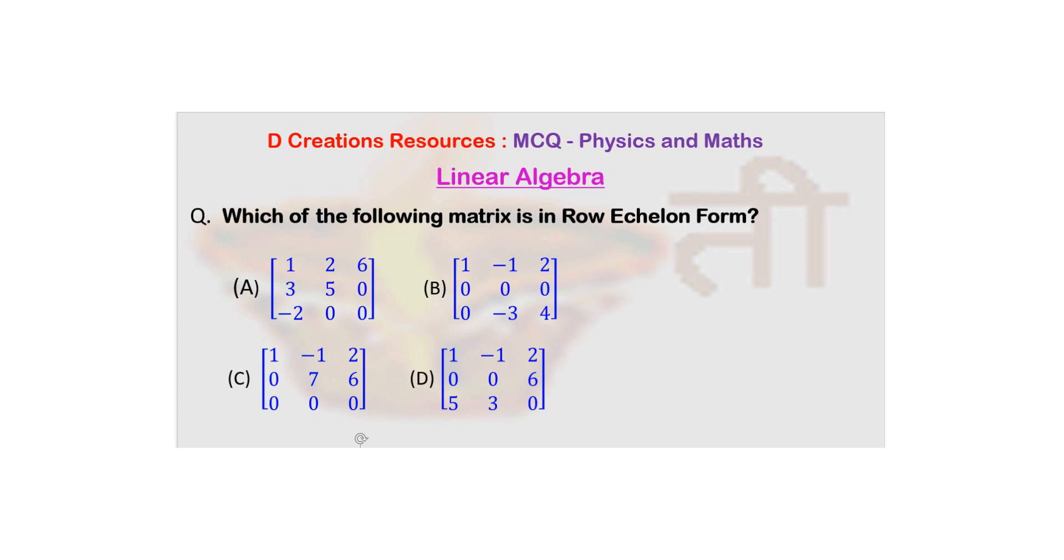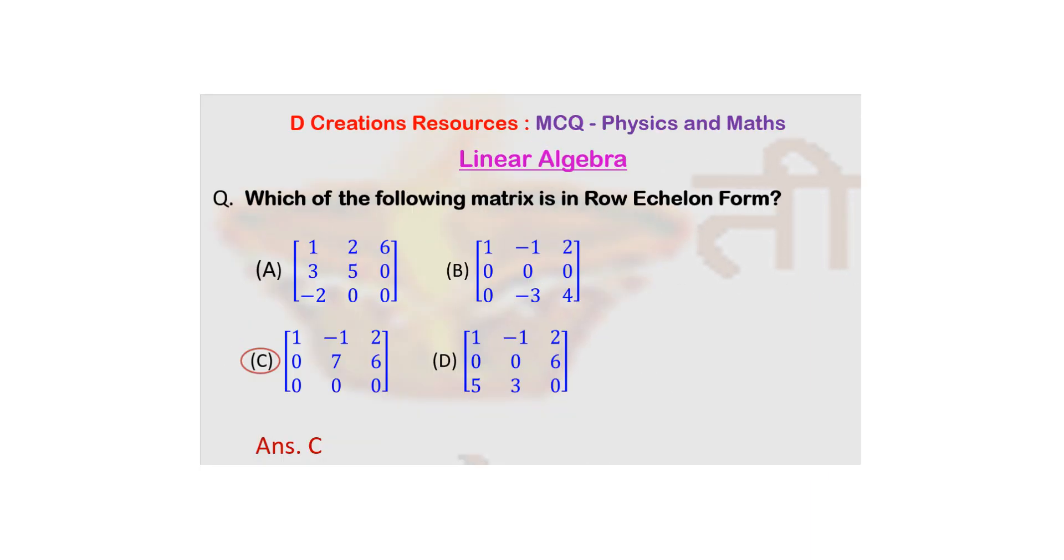And also here, you can see that the entry below seven is also zero. So C satisfies all the conditions. And hence, the answer you will see is basically the matrix given by option C. Thank you.